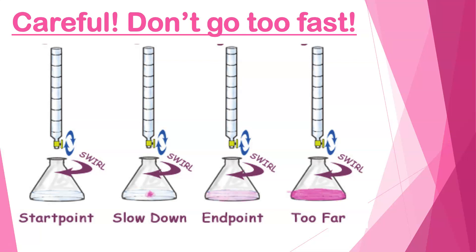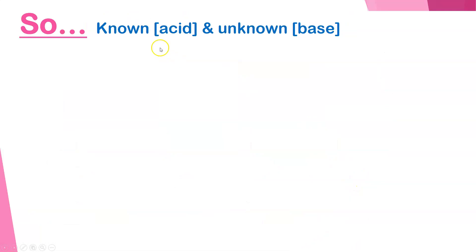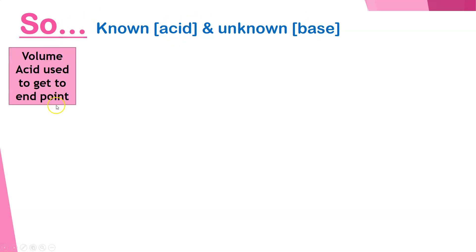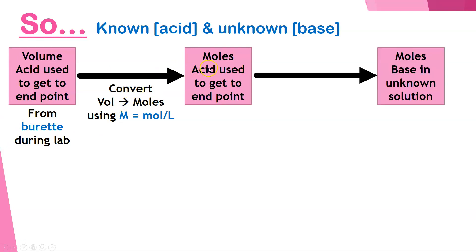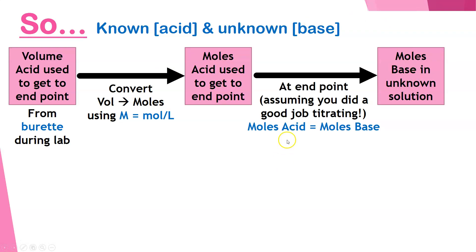Once you do your titration, you're going to read the volume on your burette to see how much base you added, and use that to calculate the concentration of the acid in your flask. If you have a known acid and an unknown base: take the volume of acid used from your burette, convert that into moles of acid using molarity — you have the molarity because the known was given to you. Assuming you did a good titration, moles of acid equals moles of base. Then, knowing the volume of your unknown solution and its moles, you calculate its concentration using the molarity formula.